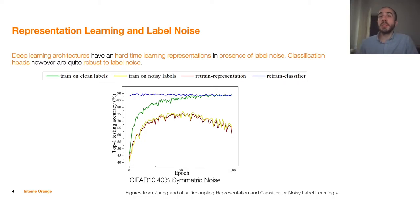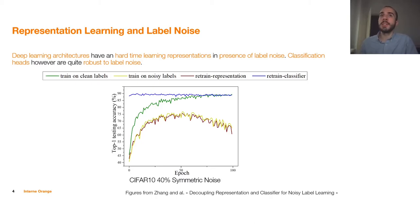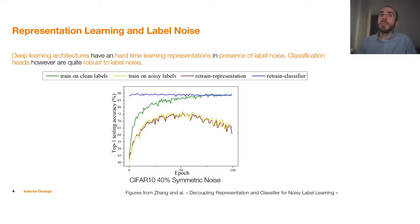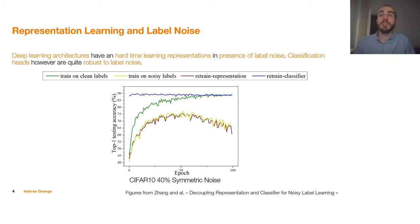Then they trained the same architecture on noisy data, shown as the yellow curve, which is way below the green curve because learning on noisy labels is harder. They tried to find the origin of this decrease in performance. First they trained the architecture on clean data, then retrained parts of it on noisy data — specifically the classifier part and the representation part. The classifier part, shown as the blue curve, is actually quite high and doesn't move much, meaning retraining the classification part on noisy data is quite robust. However, retraining the representation, shown as the red curve, is actually quite bad — it fits the yellow curve. The conclusion is that representation learning is what is affected the most by noisy labels.